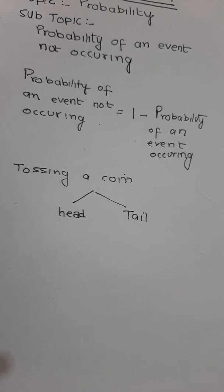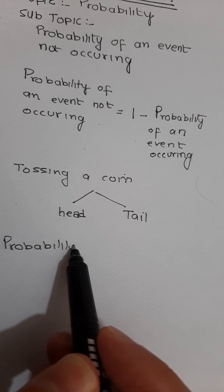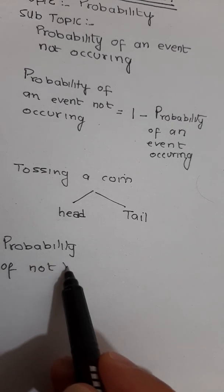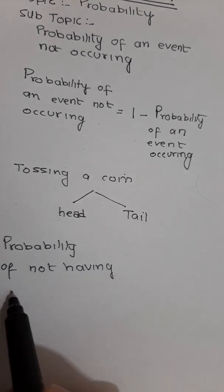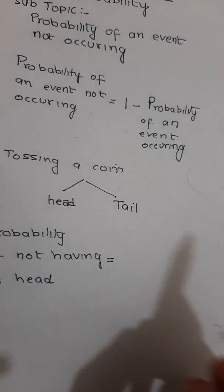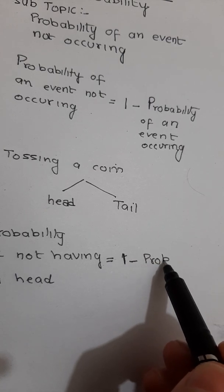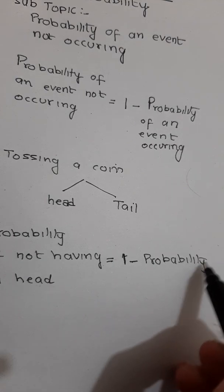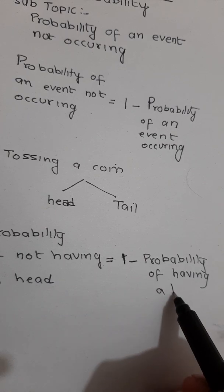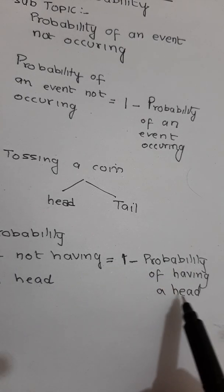If I ask you to find the probability of not having a head, that is one minus probability of having a head. So probability of not having a head is equal to 1 - P(having a head).